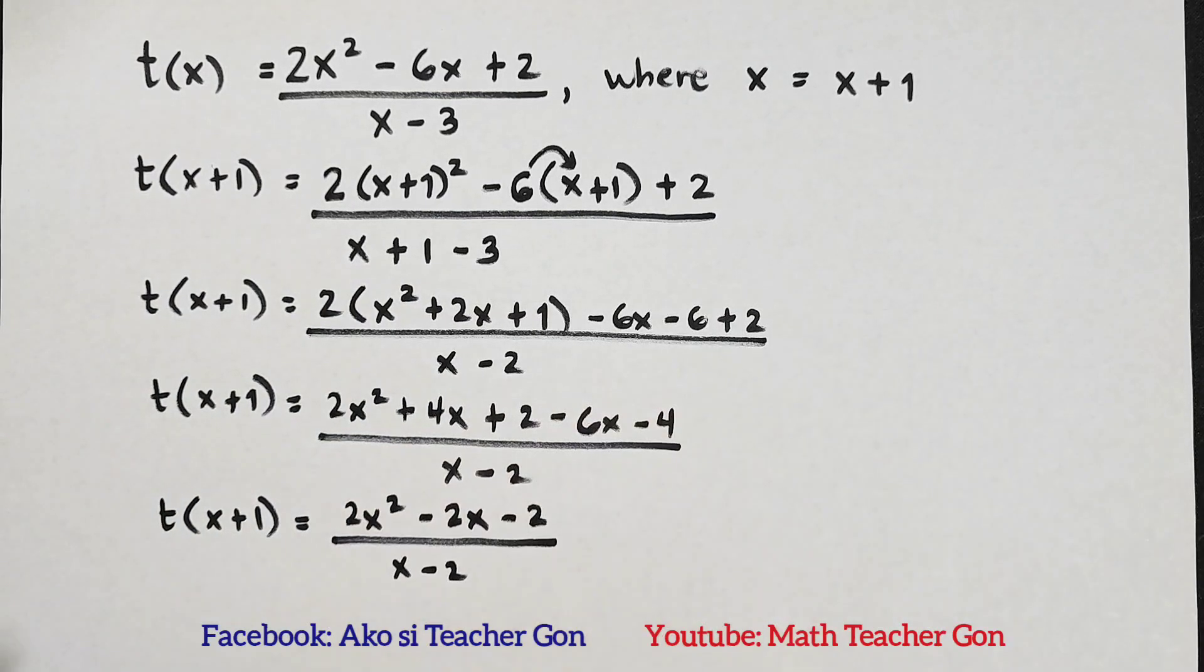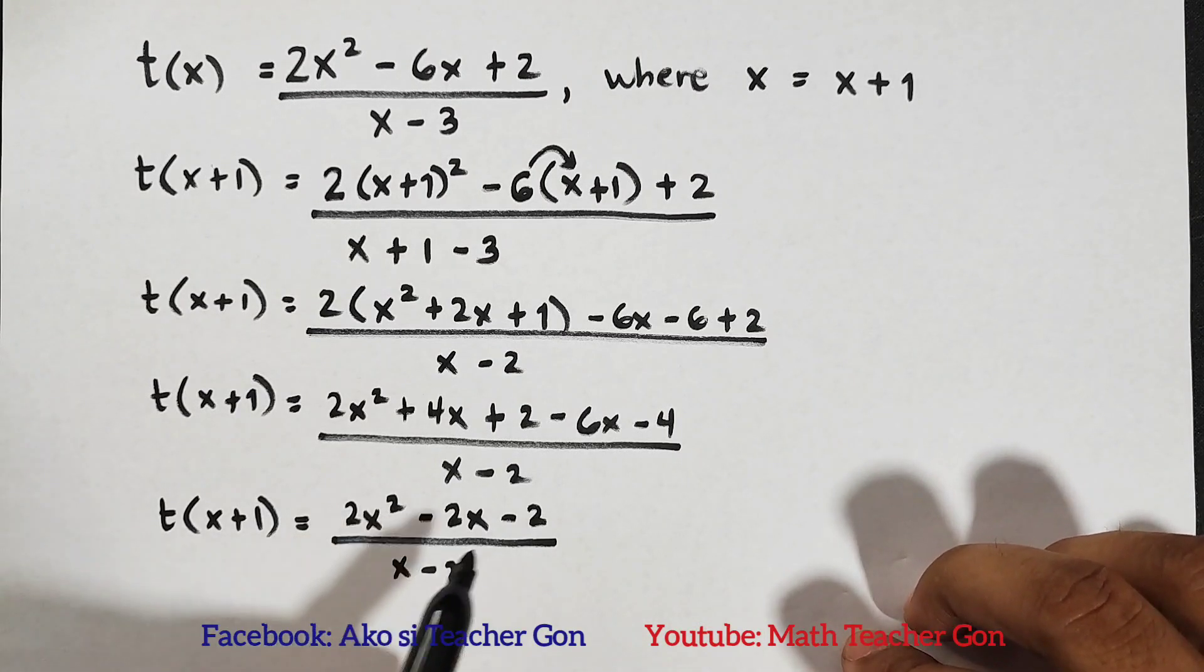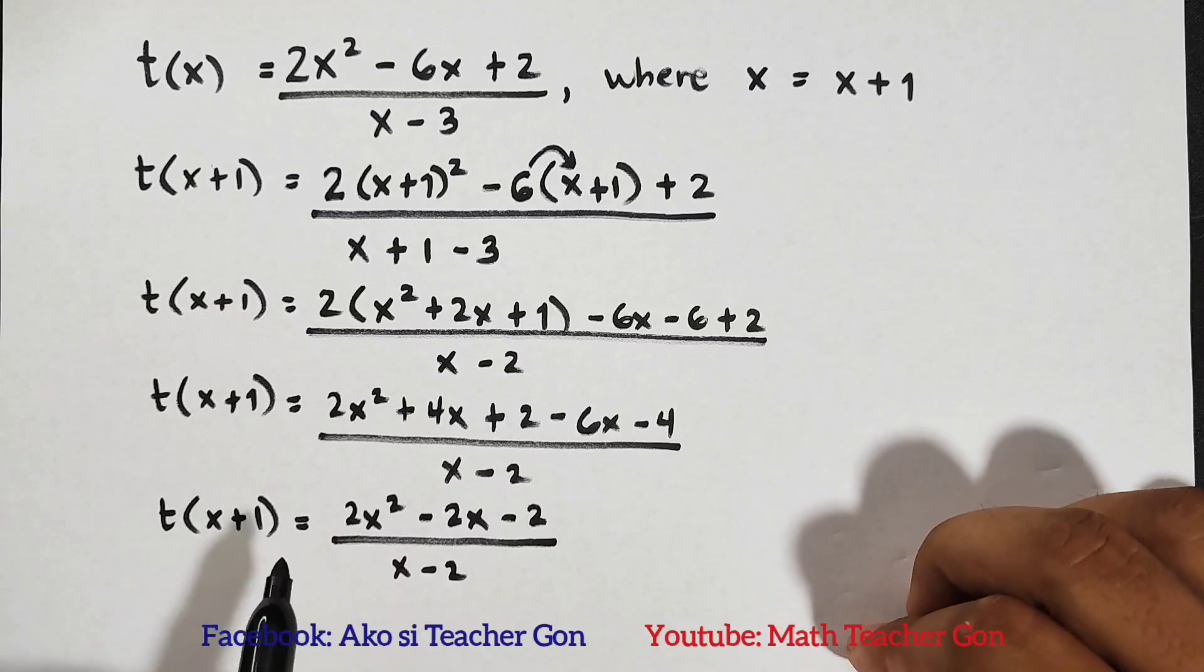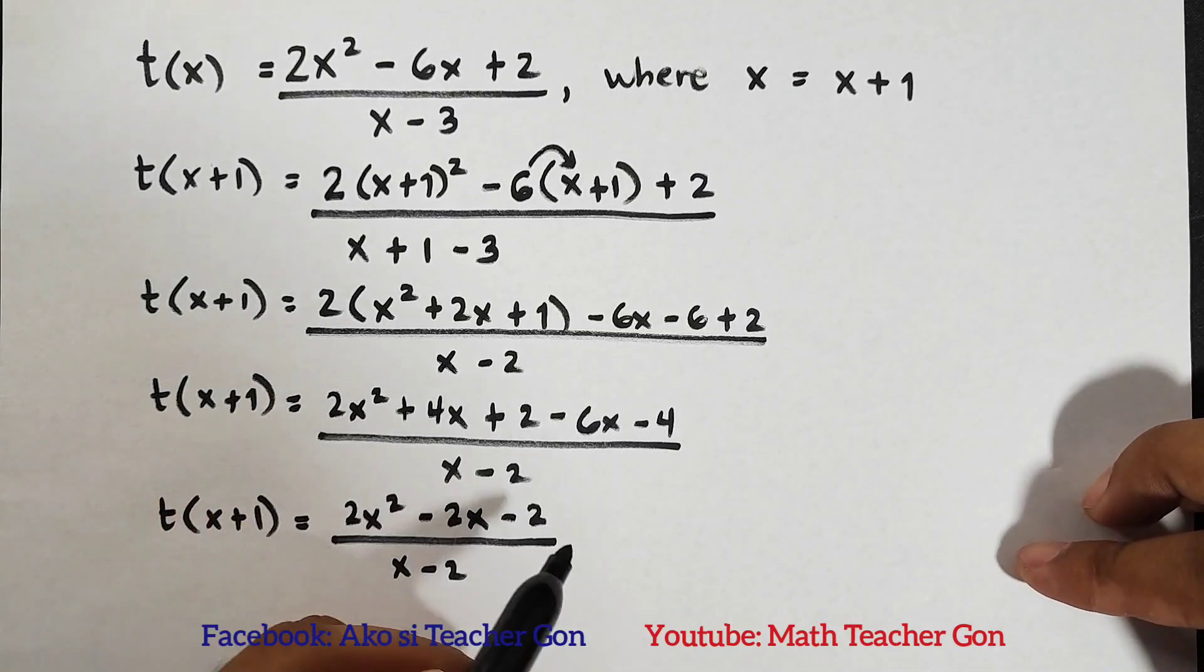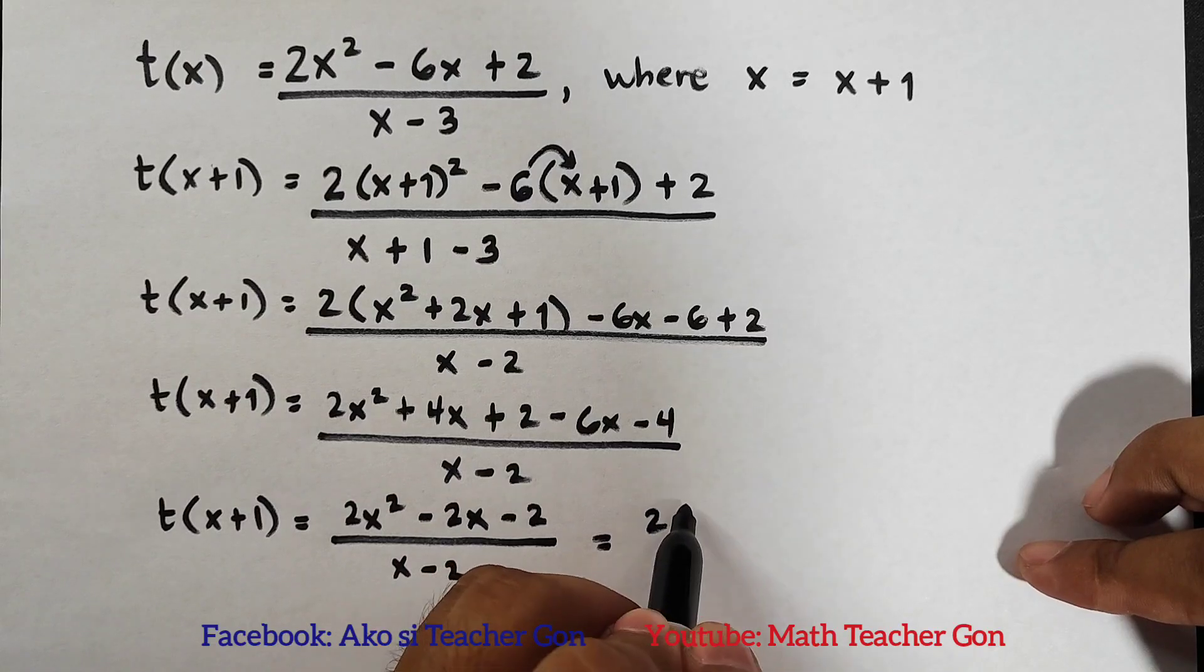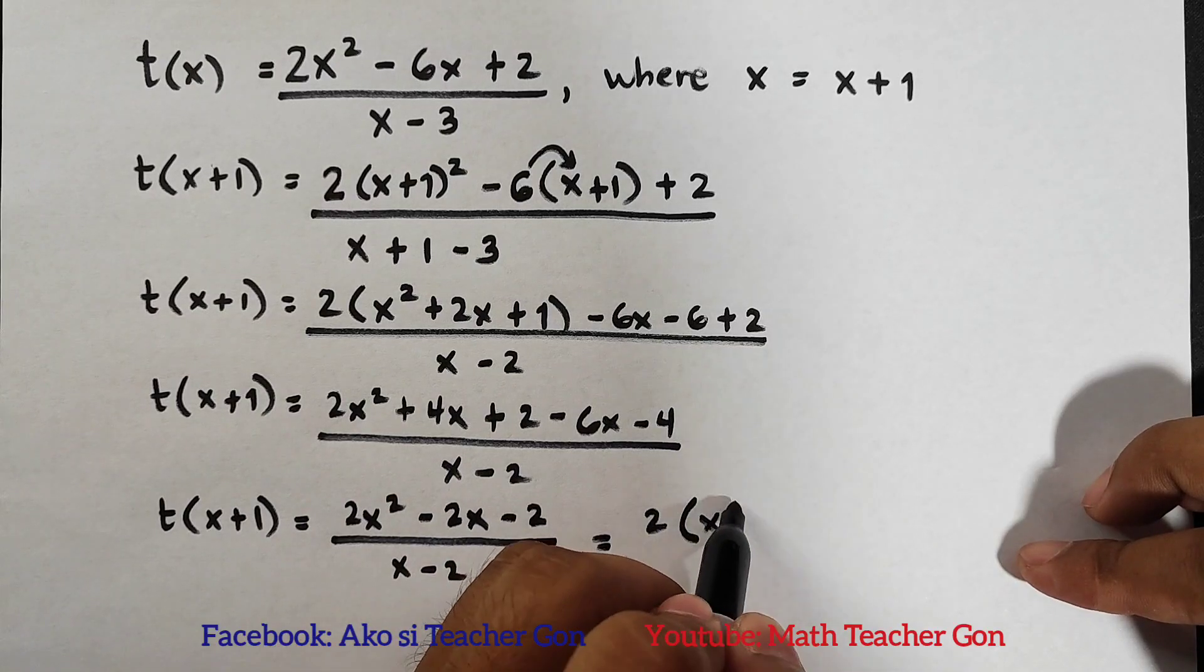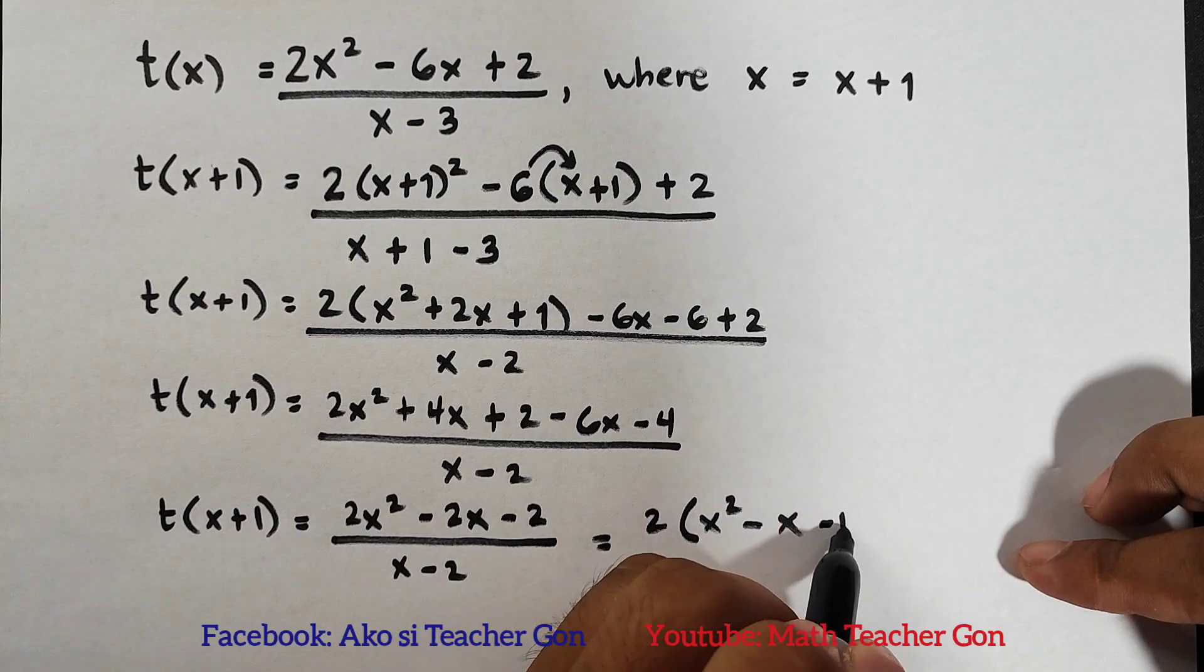Now this is a bit tricky because if you notice, we don't have anything left to combine, and we've simplified the denominator. Maybe you will stop here, but as much as possible, check if you can factor out something. As you can see, our numerator - all of them have a common factor of 2. So we can express this: we can factor out the 2 times (x squared minus x minus 1).